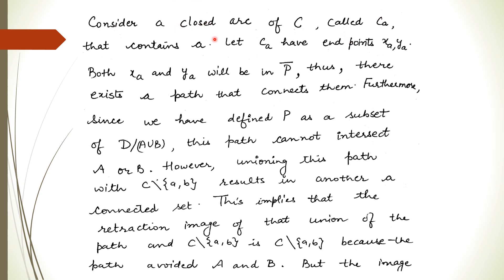Now we consider a closed arc of C which contains point A — call this CA. This arc CA has endpoints XA and YA. Both endpoints lie in the closure of P, since the closure of P contains C. So there exists a path in P connecting XA and YA. Since P is a subset of D minus (A ∪ B), this path cannot intersect capital-A or capital-B.